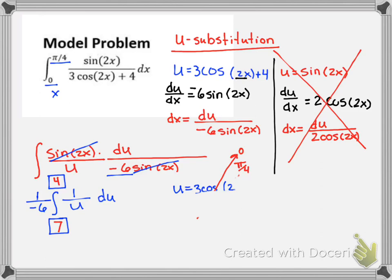Now I'll find my antiderivative. The antiderivative of 1 over u will be ln of the absolute value of u. And we have negative 1 over 6 of that. And this is evaluated from 7 to 4.